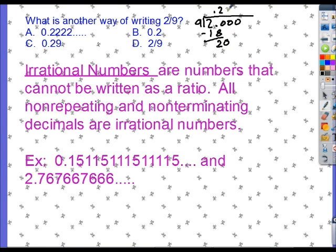9 into 20, again, twice. All right, now you should see a pattern. Every time I bring that down, so this is just going to be 0.2 repeating on forever. So your answer would be that one right there.